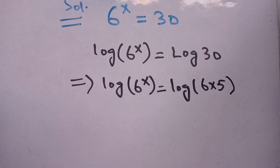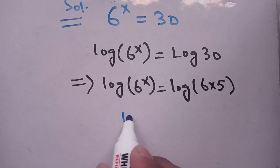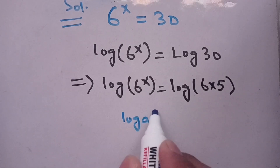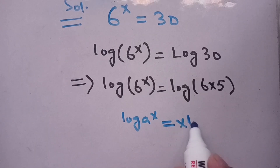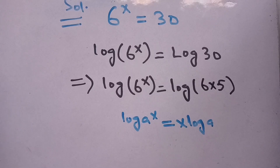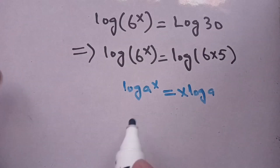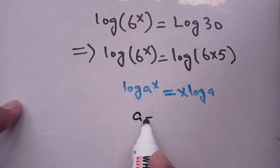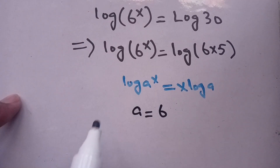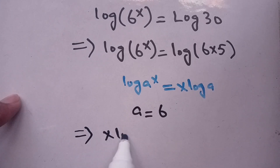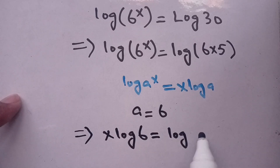By the logarithm property we know that log of a power x is equal to x times log of a. Here in place of a it is equal to 6. On using this logarithm property on the left-hand side we get: x times log of 6 is equal to log of 6 times 5.